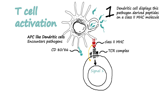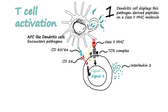Additionally, these dendritic cells express CD80 and CD86, which bind to CD28 on the T cells — this is the second interaction giving rise to Signal 2 for T cell activation. Ultimately, the T cell also secretes interleukin-2, which in an autocrine fashion binds to the interleukin-2 receptor and gives rise to Signal 3 of the activation.